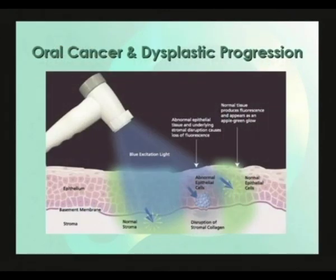This is a graphic representation of how dysplastic cells in the epithelium and the disruption or breakdown of the stromal collagen give rise to a decrease in fluorescence intensity, compared to the surrounding tissue when viewed with Velscope.